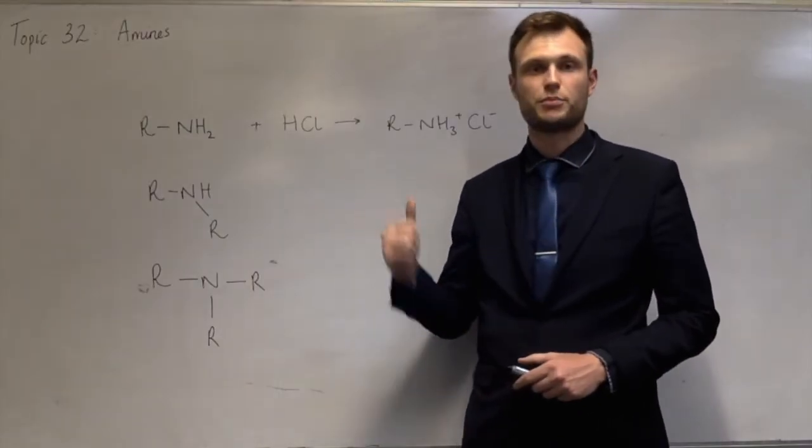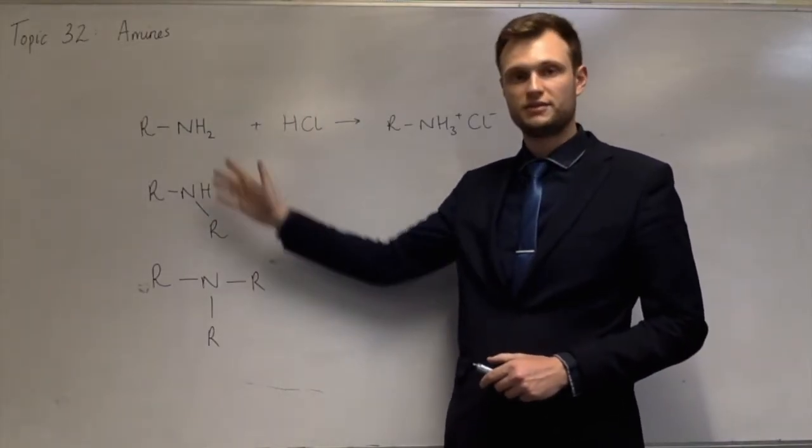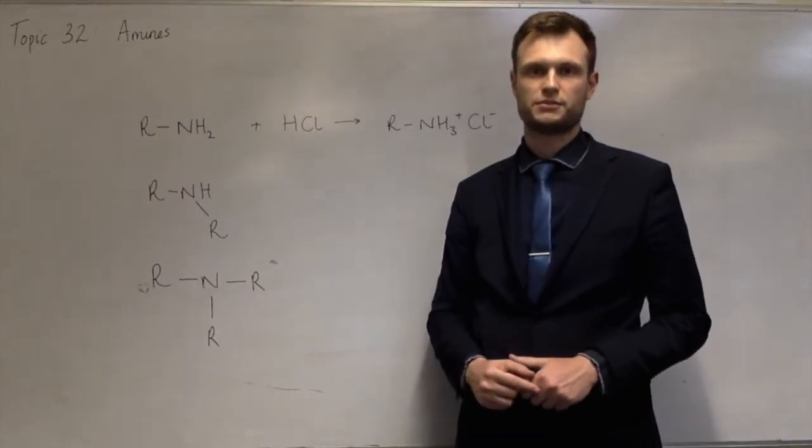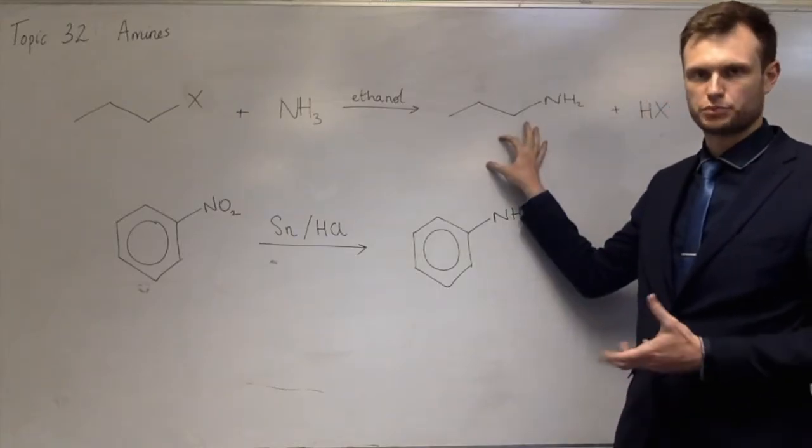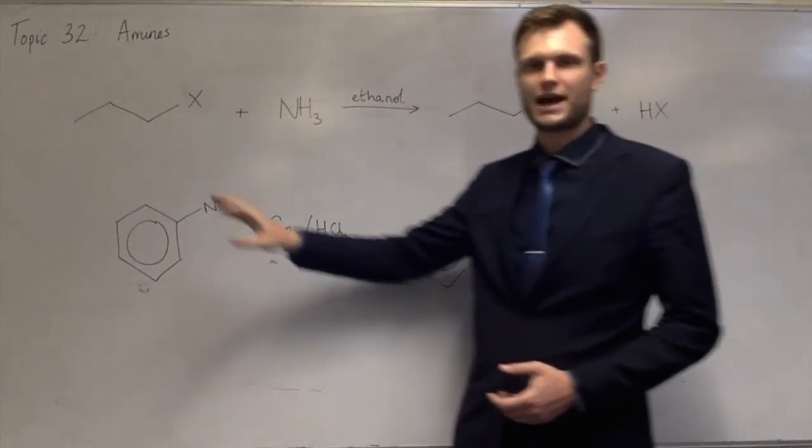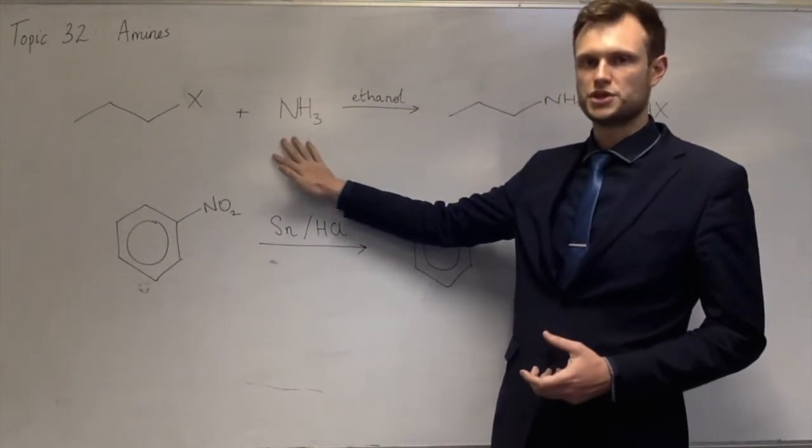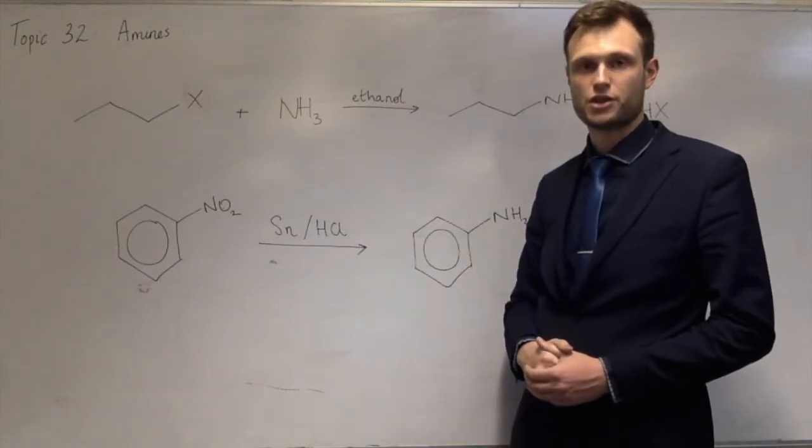Other things in this topic of amines are the preparation of these aliphatic amines, but also aromatic amines. To make this aliphatic primary amine, you would react a haloalkane with excess ethanolic ammonia. Ethanolic means that it's dissolved in ethanol.